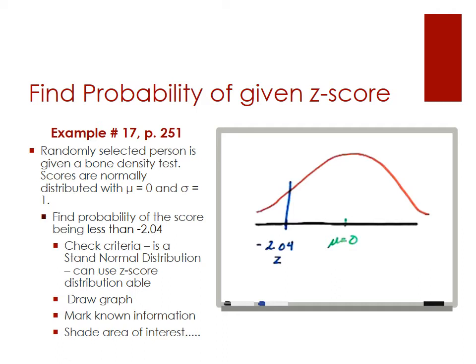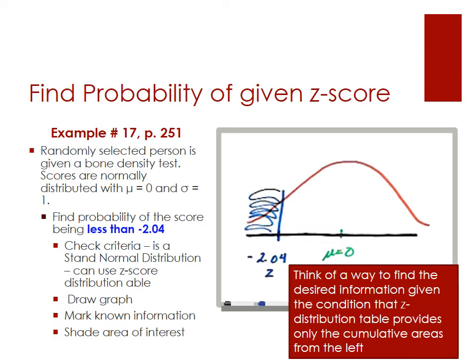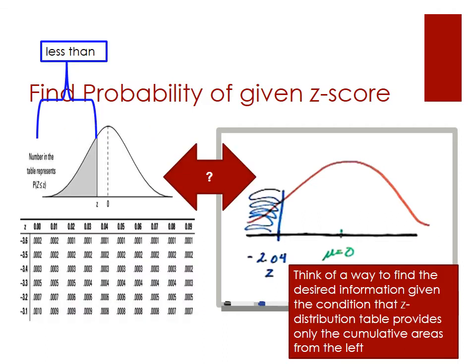The area of interest is less than negative 2.04, so we're going to shade the area to the left of the Z-score. We then need to think about how we find this desired information given that the Z distribution table provides only cumulative areas from the left. This isn't much of a problem here because it matches exactly with how the Z distribution is set up — the area up to a given Z-score encompasses all scores less than that Z-score, so it's a direct match.